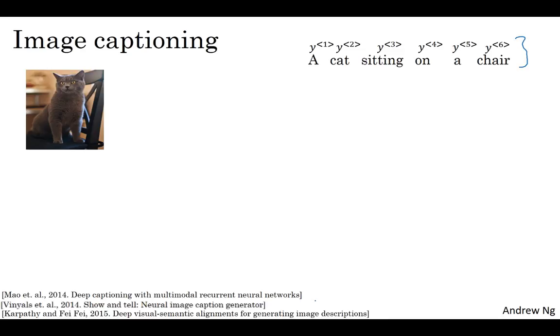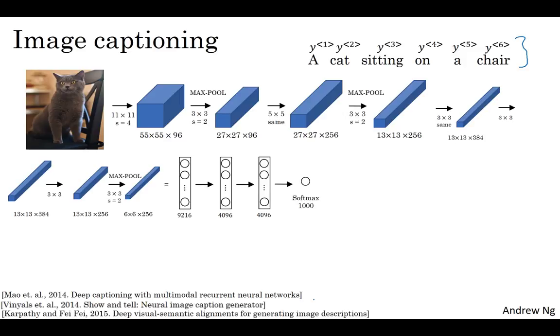From the earlier course on ConvNets, you've seen how you can input an image into a convolutional network, maybe a pre-trained AlexNet, and have that learn an encoding or learn a set of features of the input image. So this is actually the AlexNet architecture. And if we get rid of this final softmax unit, the pre-trained AlexNet can give you a 4096 dimensional feature vector with which to represent this picture of a cat. And so this pre-trained network can be the encoder network for the image, and you now have a 4096 dimensional vector that represents the image.